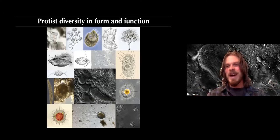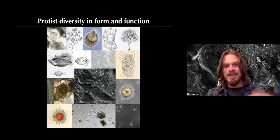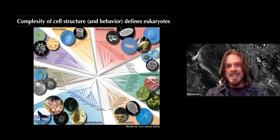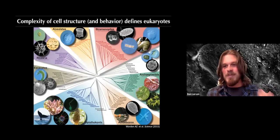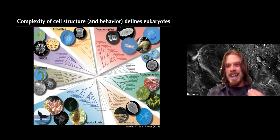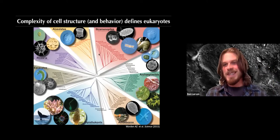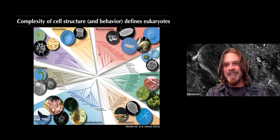If you're interested in principles of cellular behavior and you scoop some water and look at the cells inside, you'll find microbial eukaryotes called protists — there's incredible diversity of form and function. Here's a tree of eukaryotes illustrating that the vast majority are these microbial protists, and complexity of cellular structure defines eukaryotes. There is shared ancestry reflected in shared components like aspects of the cytoskeleton, but this diversity gives us the opportunity to pick the best system for our question. Wallace Marshall's lab is very good at picking among that diversity to find the perfect cell for the job.